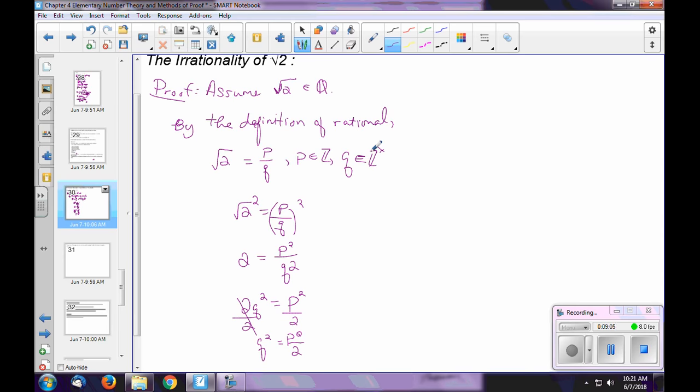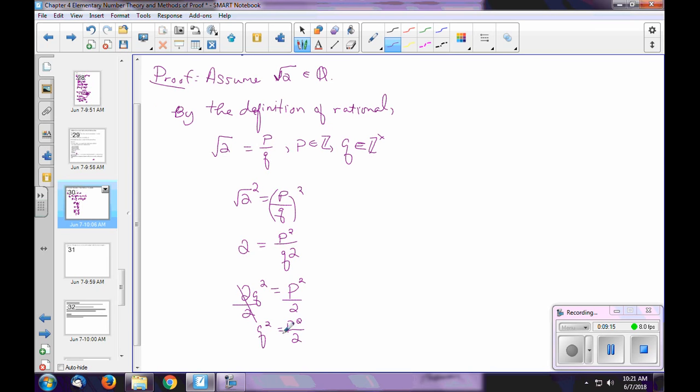Q is an integer, non-zero specifically, if Q is an integer, that means Q squared has to be an integer because of the closure property of the integers under multiplication. So if Q is an integer, so if Q is an integer, but you can write it as P squared over 2, there's no guarantee that that will also, in fact, be an integer. So we have found our contradiction.